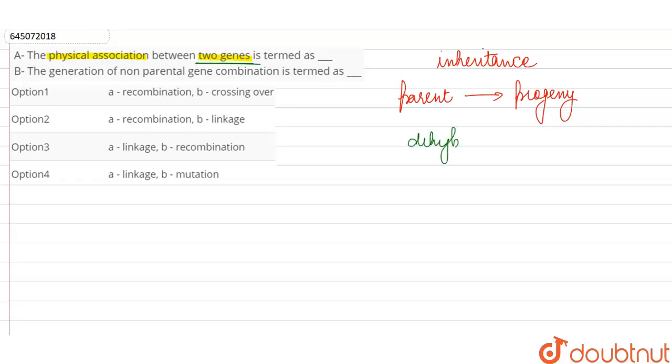So let us take an example. Suppose we are taking the example of our pea plants itself, the Pisum sativum plants. So let the two genes be for seed shape and seed color.